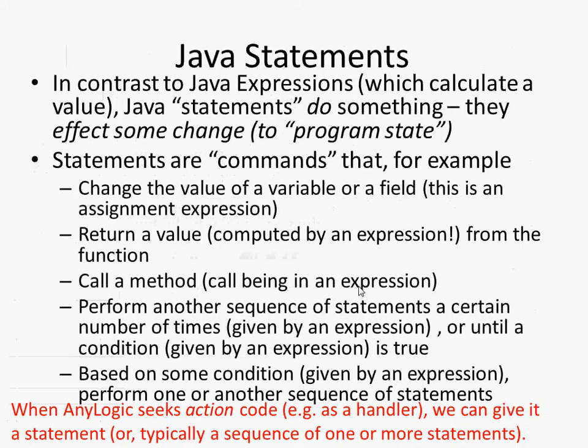Now focusing on statements: Java expressions calculate values that can be stored in a variable — a double, int, character, boolean, or a reference to some object such as a person, the main class, or an experiment. Java expressions compute values — they're like the formulas we see in a spreadsheet or in algebra.